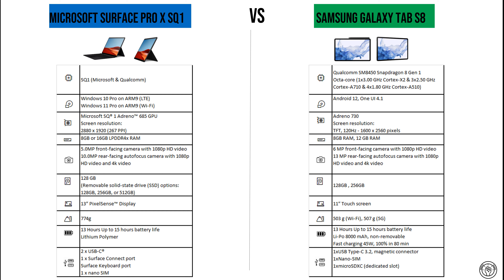As for storage, the base Surface Pro X SQ1 comes with 128 gigabytes on a removable solid-state drive, with options for 256 gigabytes or 512 gigabytes. The Samsung Galaxy Tab S8 comes with 128 gigabytes paired with 8 gigabytes of RAM, and 256 gigabytes available with both 8 gigabyte and 12 gigabyte RAM configurations.